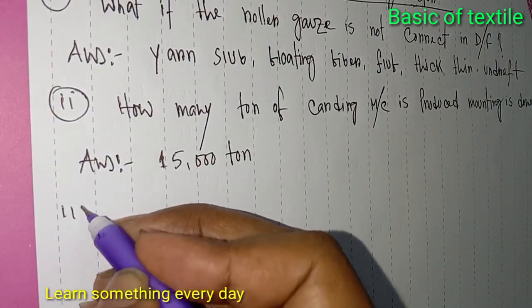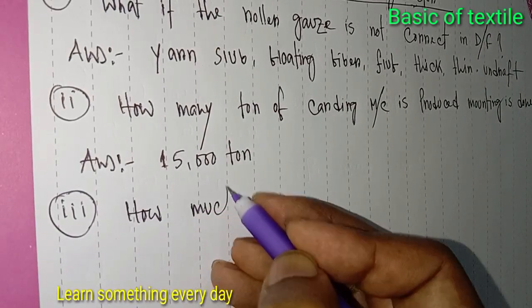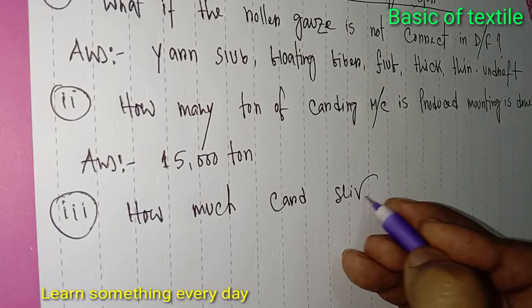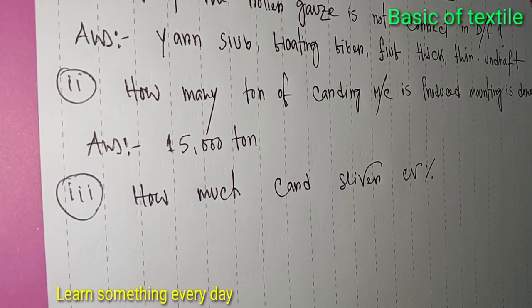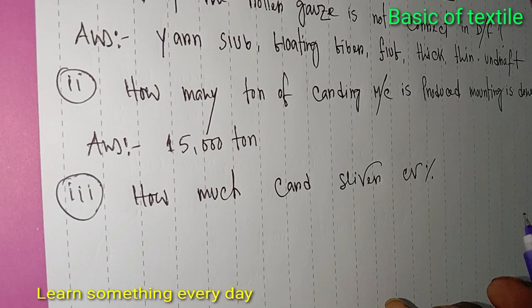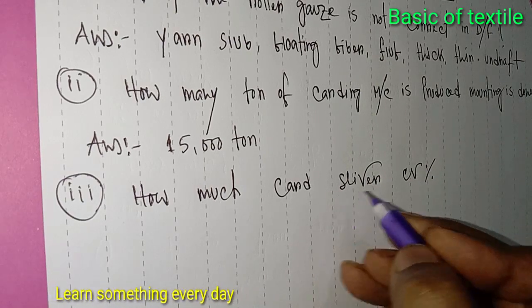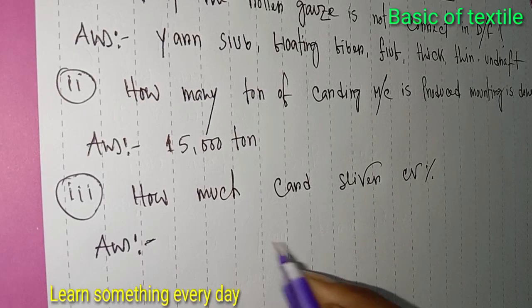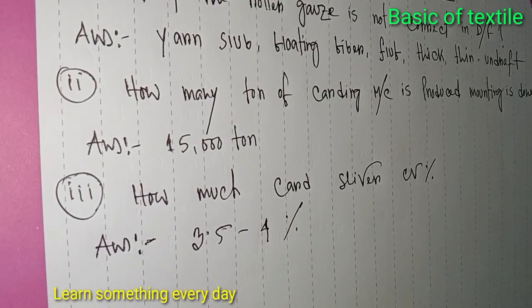Number three: How much card sliver CV percent? Answer: 3.5 to 4 percent.